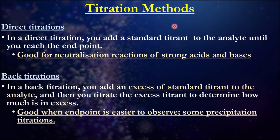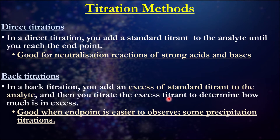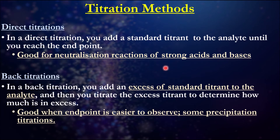There are two types of titration methods. In a direct titration, you add your standard solution to the unknown solution until you reach the endpoint. In back titration, you add an excess amount of your standard solution to your unknown solution, then titrate the extra standard solution to determine how much was in excess. Back titration is great when the endpoint is easy to observe, particularly for precipitation titrations. Direct titrations are better for more distinct changes, such as a neutralization reaction.